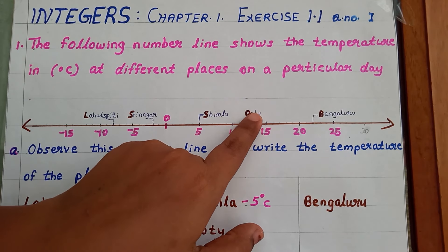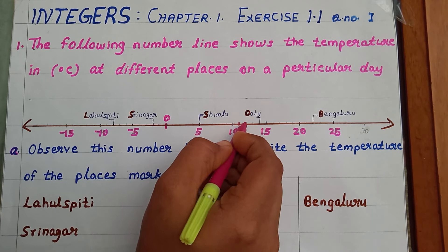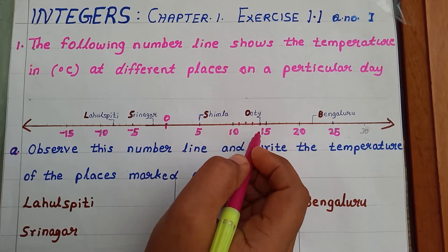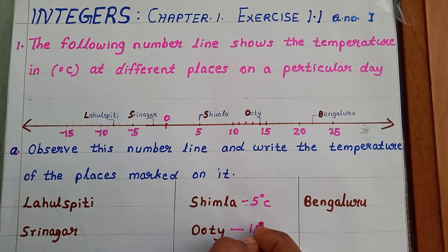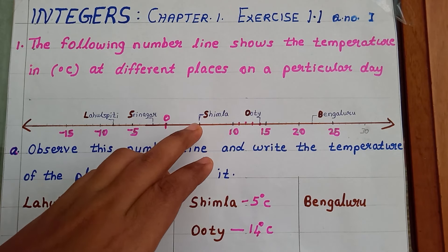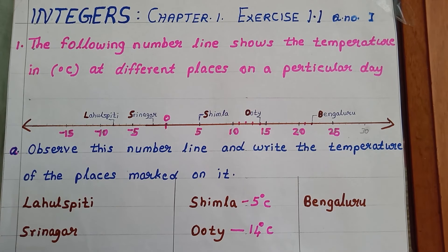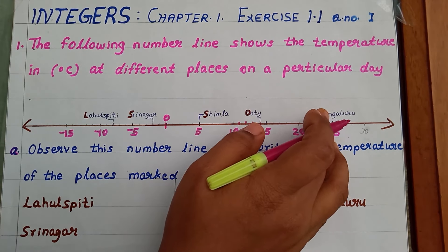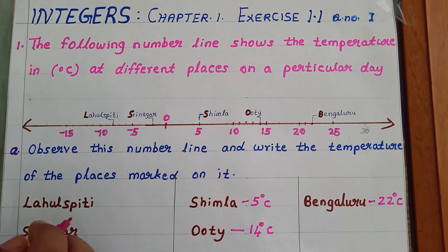The next one is Ooty, which is at 14 degrees Celsius. The temperature at Ooty is 14 degrees Celsius. Then the next place is Bangalore — counting up: 10, 15, 20, 21, 22 — 22 degrees Celsius is the temperature at Bangalore. So here I can write down 22 degrees Celsius.